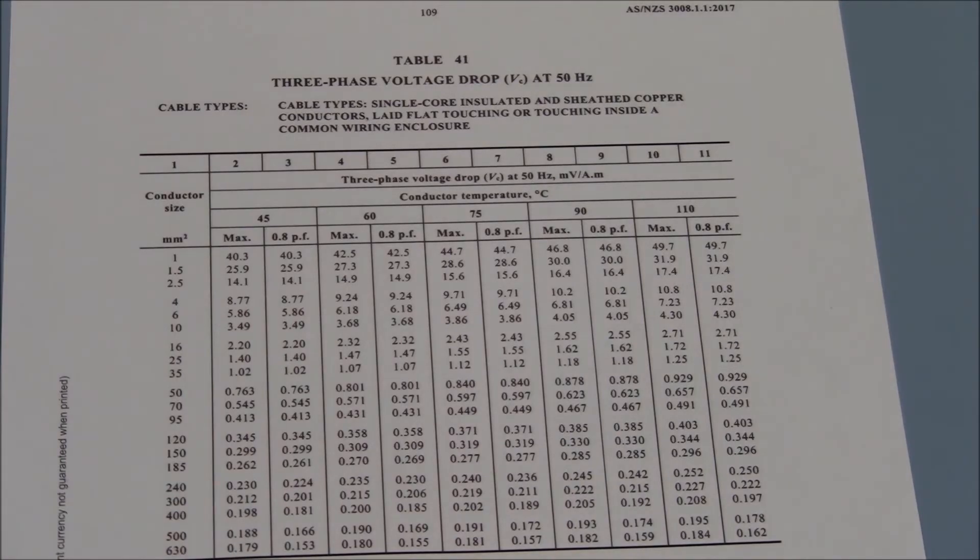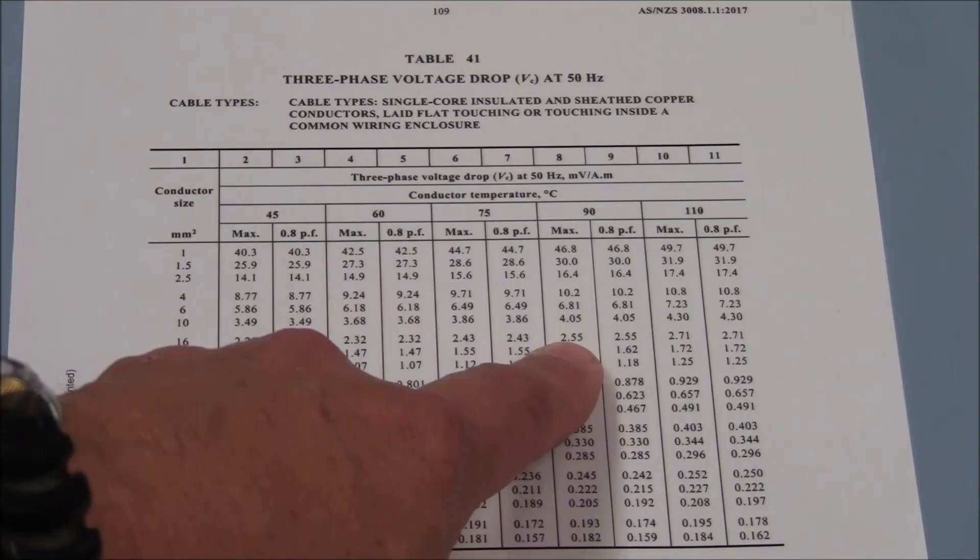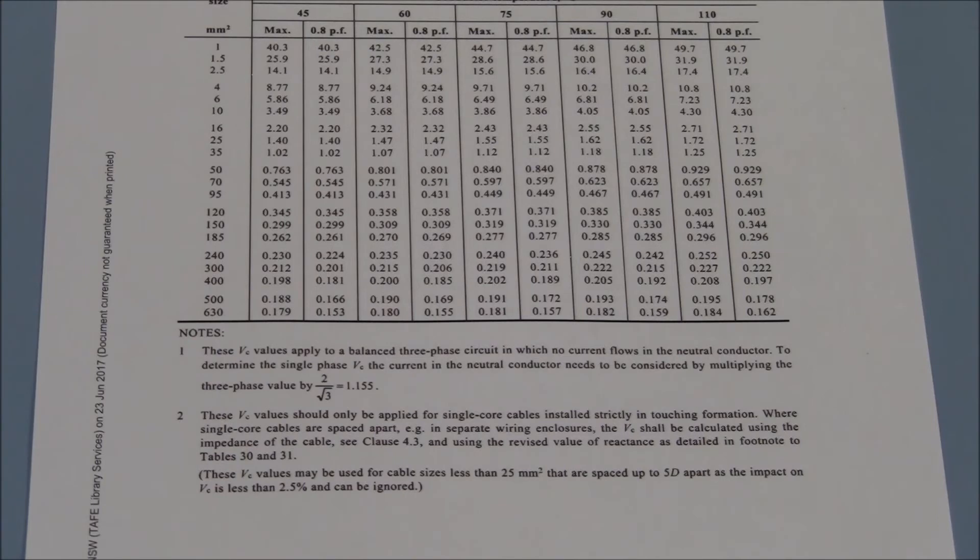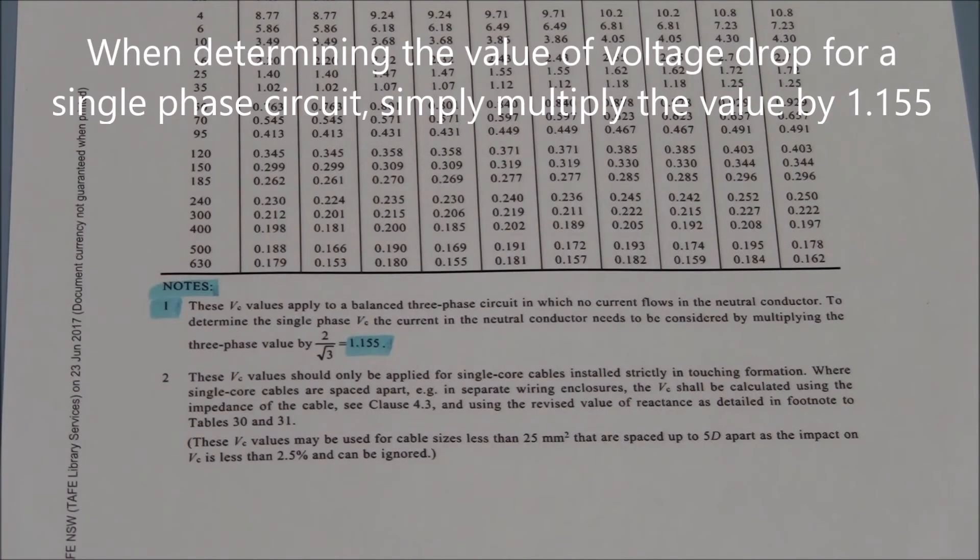Consulting table 41 column 8 for 90 degree, the value of VC is 2.55. However, as this is a single phase circuit we need to convert this three phase value by multiplying it by 1.155 as per the footnote at the bottom of every voltage drop table.